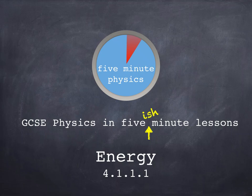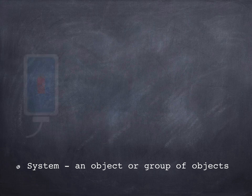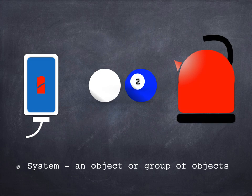Welcome to 5 Minute Physics. This video is an introduction to energy stores and pathways. First, a definition. You'll hear the term system being used when we talk about energy. A system is just an object or a group of objects. A phone charging, two colliding snooker balls, or a boiling kettle are all examples of systems.